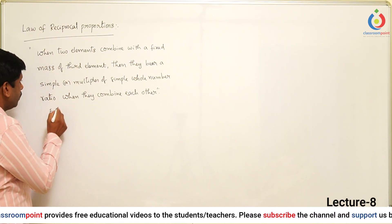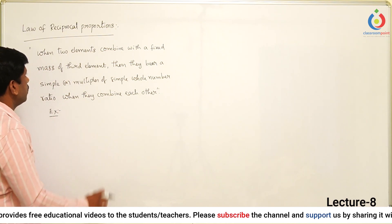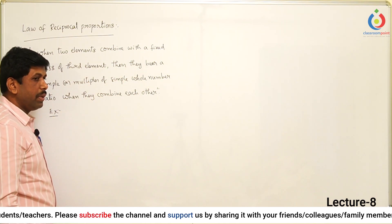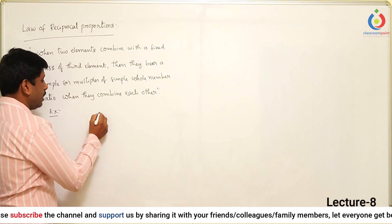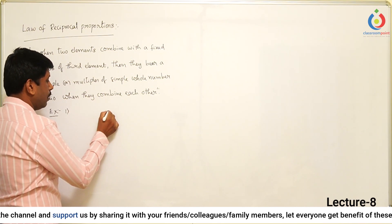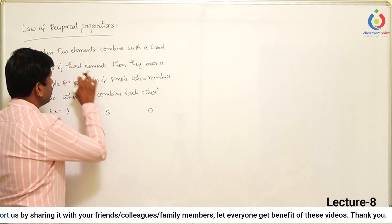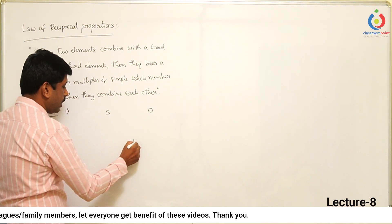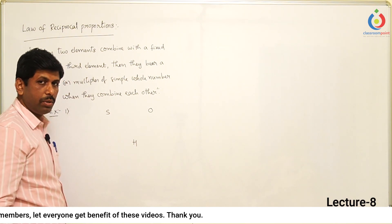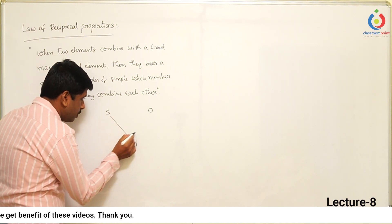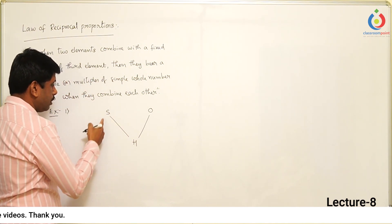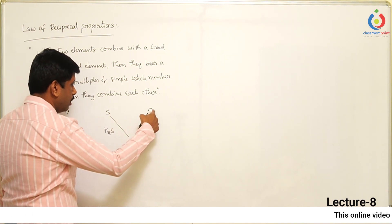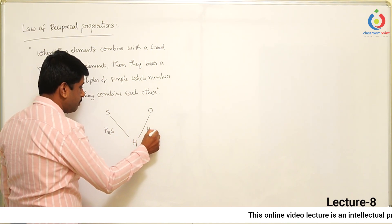The definition says that when two elements combine with a fixed mass of the third element, we need to take a minimum of three elements. Let us take sulfur and oxygen as the first two elements. The third element will be hydrogen. So sulfur and hydrogen produce hydrogen sulfide (H₂S), and oxygen and hydrogen produce H₂O. Here the fixed mass of hydrogen is 2 grams.